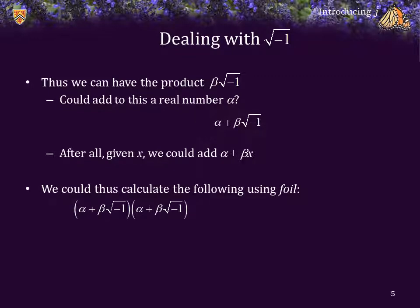Thus, we could actually square alpha plus beta times the square root of negative 1 using FOIL — first, outside, inside, last. First, we multiply alpha times alpha to get alpha squared. Then we multiply alpha times beta times the square root of negative 1, which is just alpha beta times the square root of negative 1, because we're just multiplying the two real numbers. Inside is beta times the square root of negative 1 times alpha, which is more or less the same thing. And we're left with beta times the square root of negative 1 all squared.